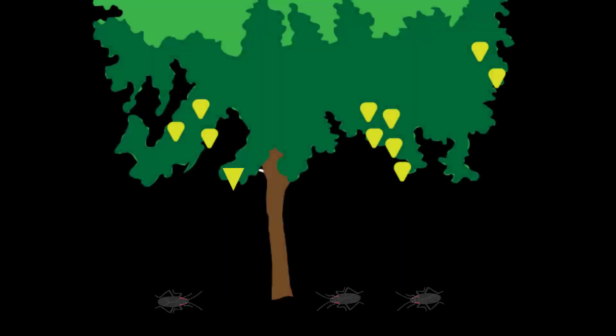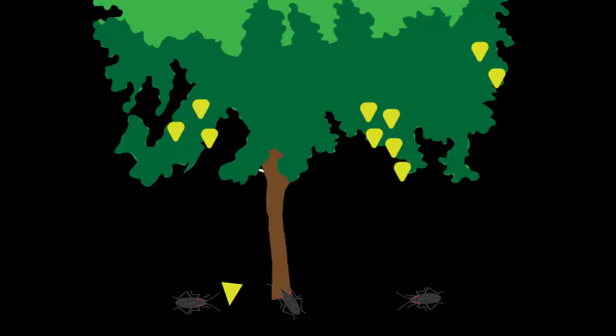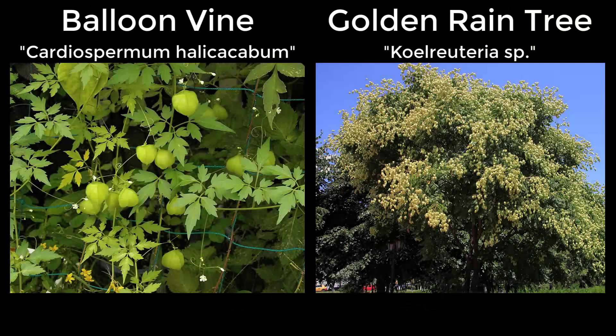The bugs live on the ground below their host plant and wait for the fruits to fall before feeding on them. However, females seeking nutrition for eggs are likely to climb the plant to reach fruits before they fall. In Davis, two of the host plants that soapberry bugs feed on are the golden rain tree and the balloon vine.